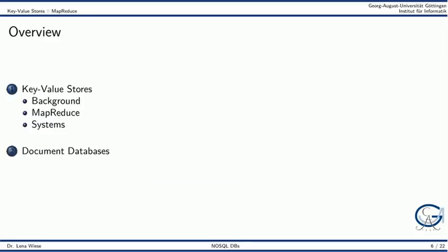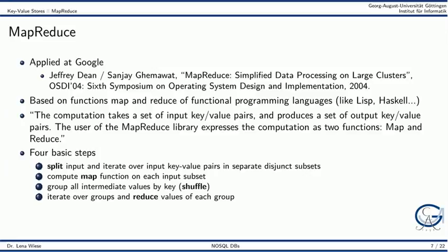Next, we come to the topic of MapReduce. MapReduce was proposed by Google. Its idea is based on the Map and Reduce functions of functional programming languages. The Map and Reduce functions operate on some input key value pairs and transform them into a set of output key value pairs. The whole MapReduce framework consists of four basic steps.